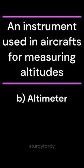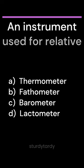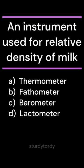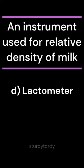Answer: B. Altimeter. An instrument used for relative density of milk. A. Thermometer. B. Fadometer. C. Barometer. D. Lactometer.